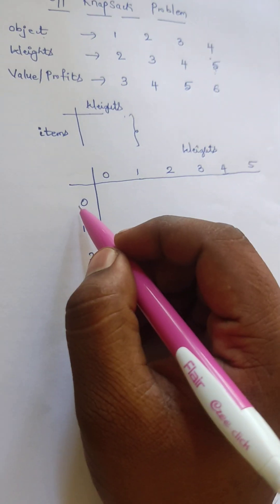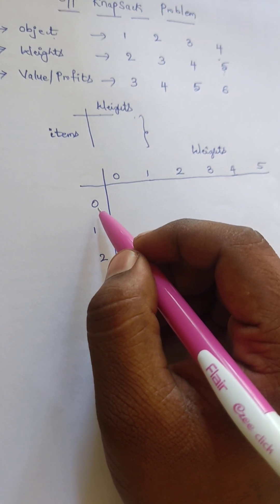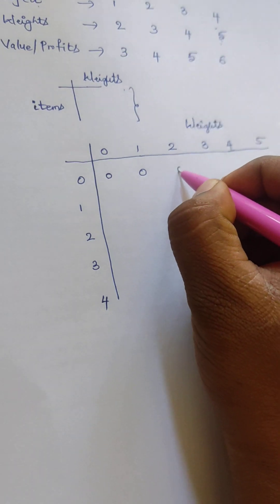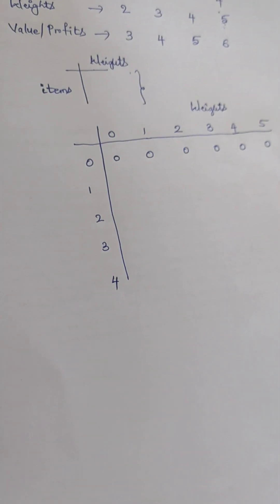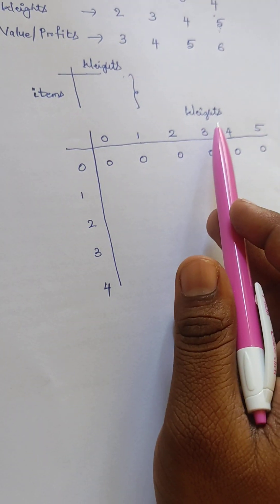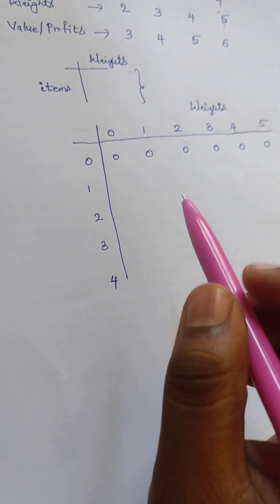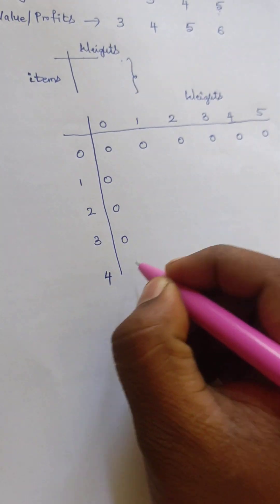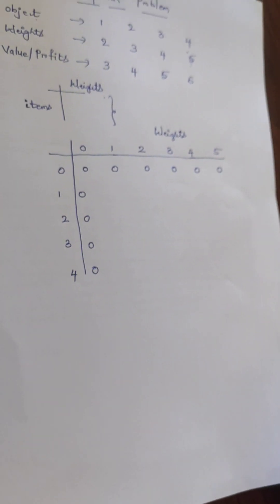If we are not taking any kind of object, then there is no profit, so every value in that row should be 0. Also, if the weight is equal to 0, it means we have never taken any object, so the first column is also kept as 0.